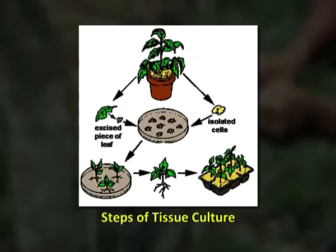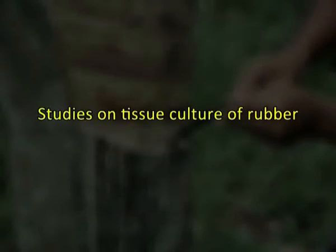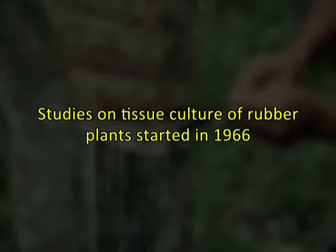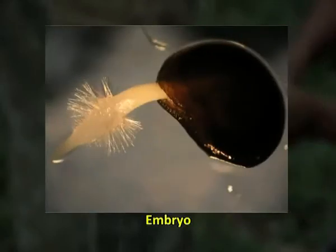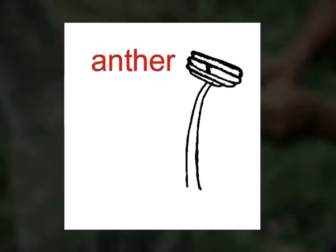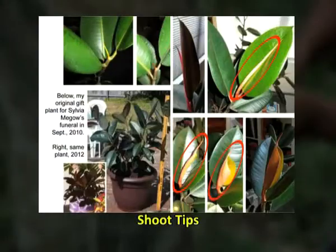In brown conventional budding, older buds of brown color are used, while in green budding and young budding, green tender buds are utilized. Propagation of rubber is also possible through tissue culture, also called micropropagation — the technique of producing plants from small micro pieces of plant tissue. Studies on tissue culture of rubber plants were started in 1966, and different parts of plants such as embryo, shoot tip, and integuments can be used.